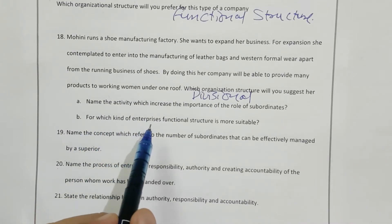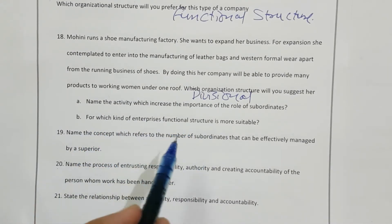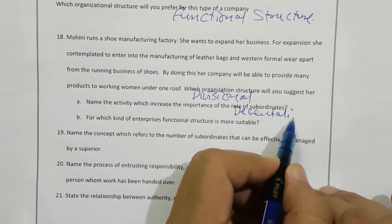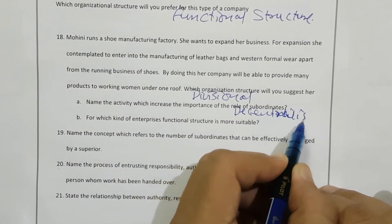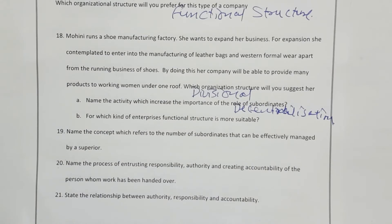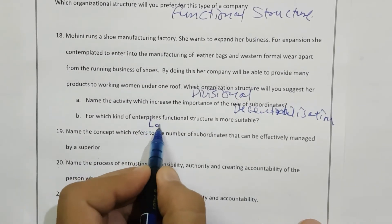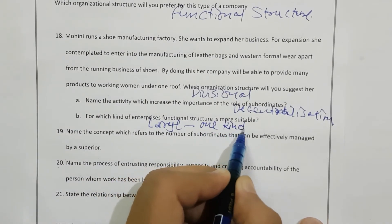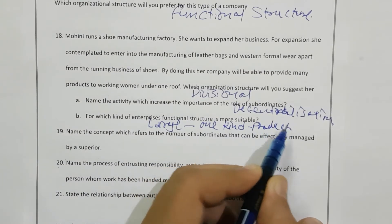Name the activity which increases the importance and role of subordinates. Obviously it is decentralization. In decentralization, the role of subordinates is increasing all the time because we are sharing authority and responsibility. Next, which kind of enterprise is functional structure more suitable for? Functional structure is obviously suitable for large organizations producing one kind of product.